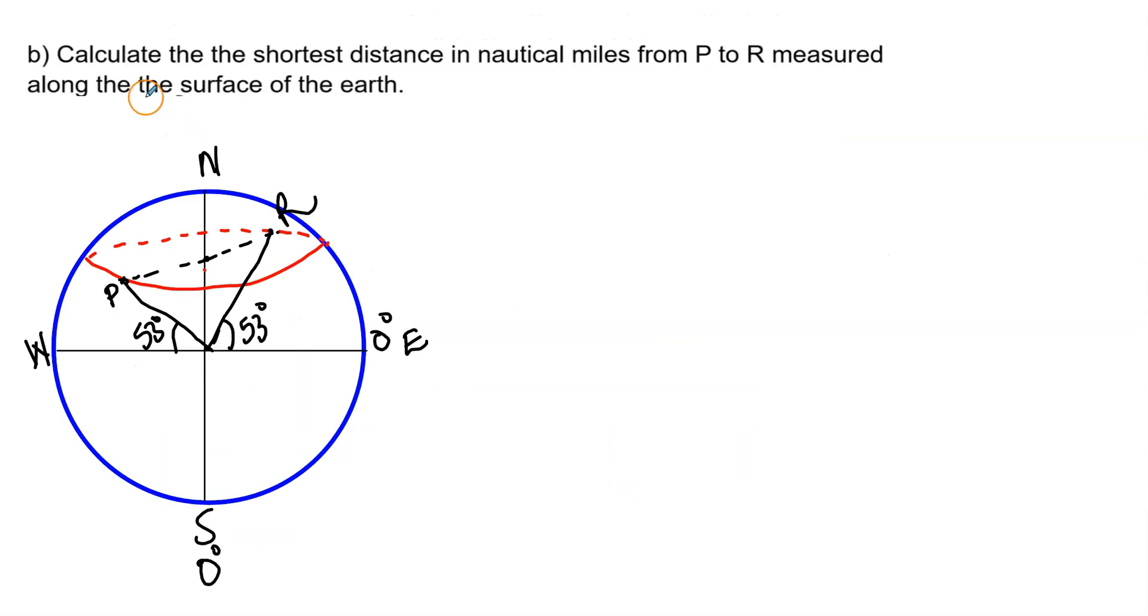And now for part B, we're asked to calculate the shortest distance in nautical miles from P to R measured along the surface of the earth. So again, P to R is there, that's the diameter. Then we have 53 degrees, that's the position of our latitude. And what's the angle here between these two angles? Well, we know that's 180, take away 53, take away 53. So this angle here is going to be 74 degrees.